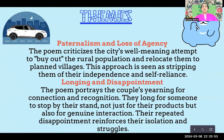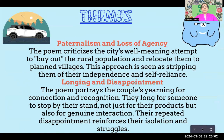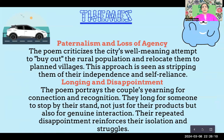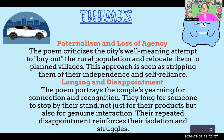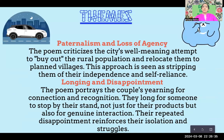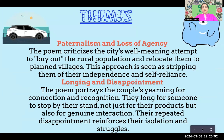The third theme is paternalism and loss of agency. Paternalism means those in authority act according to their own free will, completely disregarding the interests of the other party. The other party must simply follow rules set by their superiors. This poem critically examines the city's well-meaning attempt to buy out the rural population — trying to make rustic places urban — while completely disregarding the interests of the people already living there. Not everyone wants to live in an urban setup; many people love their village and countryside setting.